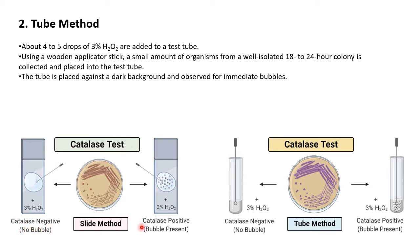No bubbles means catalase negative; presence of bubbles means catalase positive. For the tube method: take about four to five drops of hydrogen peroxide in a test tube, then using a wooden applicator pick up a small amount of organism from a well-isolated 18–24 hour colony and place it in the test tube. When performing biochemical tests, the culture should be fresh and well-isolated, with incubation not more than 24 hours, so all enzymes are present and good results are obtained.